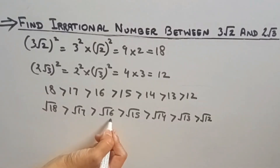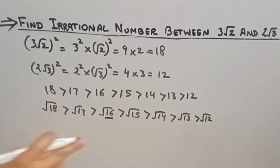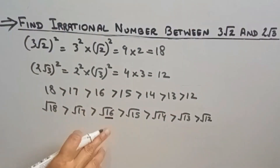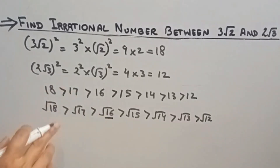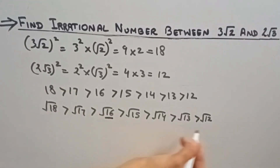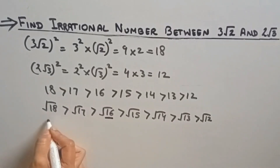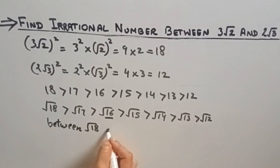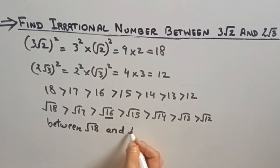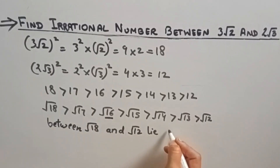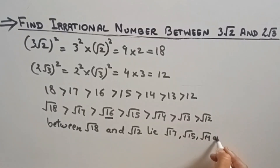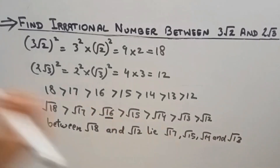As we know that 16 is a perfect square, so we will skip it because we have to find an irrational number. We skip any perfect squares between root 18 and root 12 since taking their root gives a rational number. So we choose 13, which is not a perfect square, meaning root 13 is an irrational number lying between 3 root 2 and 2 root 3.